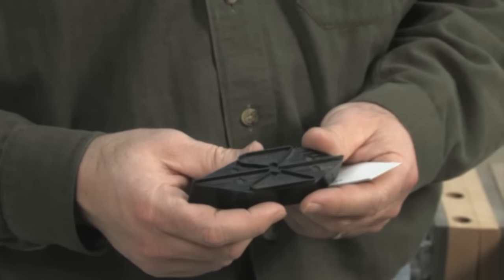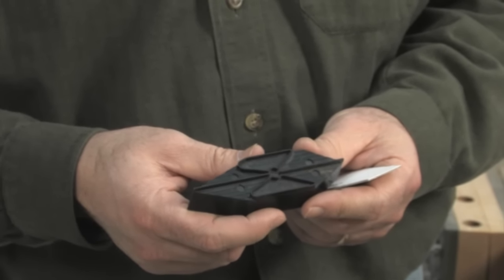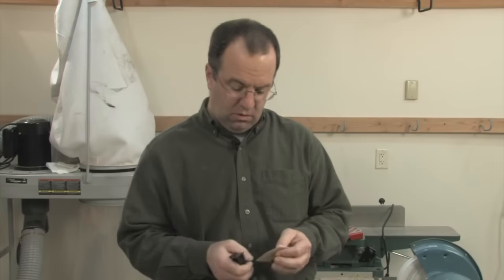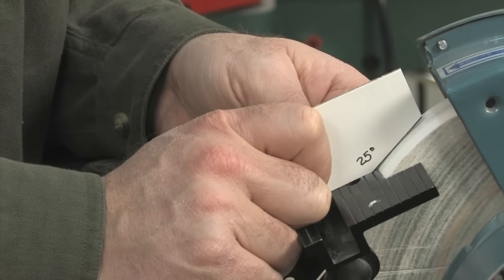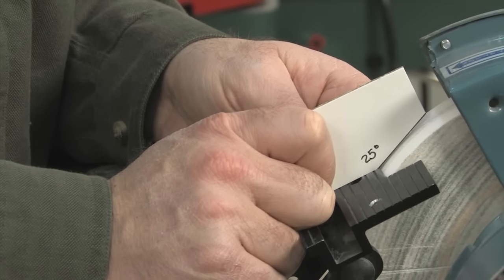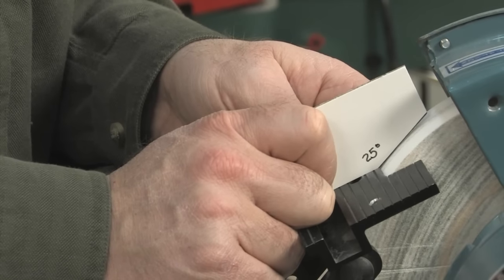You can buy one of these inexpensive little angle setting gauges, or you can just make one yourself out of cardboard. Since the chisel sits right down against the tool rest when you're grinding, put the bottom part of your angle gauge against the wheel.